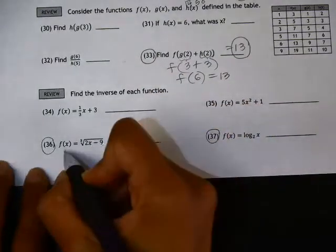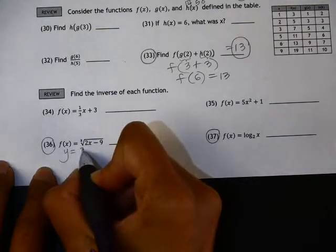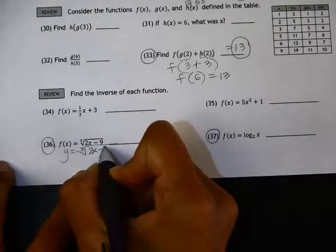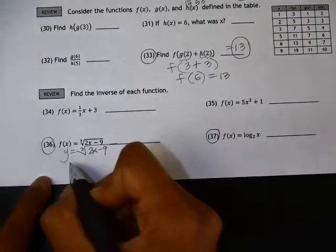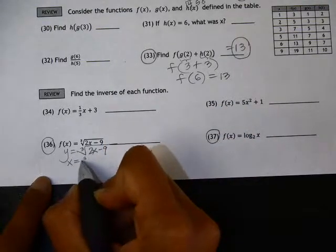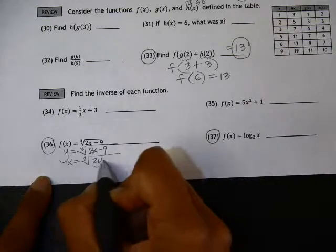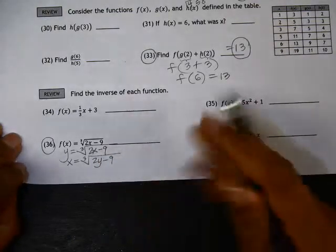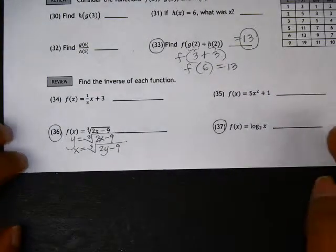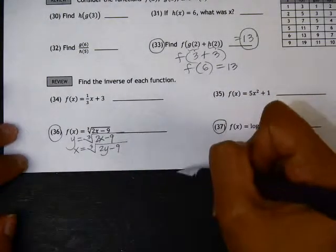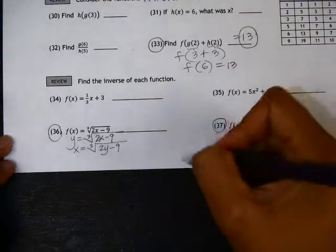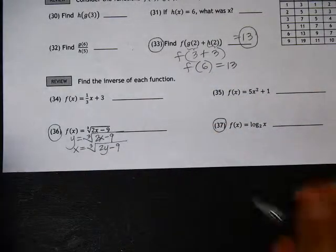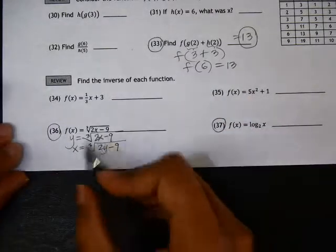One way is to think of this as y equals - f of x is the same as y equals - and inverse means that the x and the y are switched. Our next step here would be to isolate y. Another way you may have done it in class is by listing a step-by-step table of the original function and then trying to reverse those steps to write the inverse. So you can go about it that way as well.